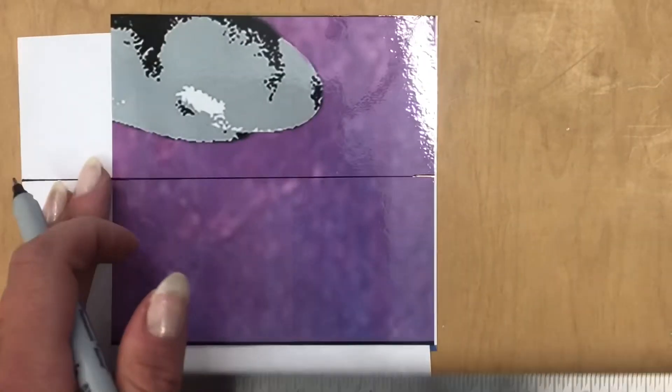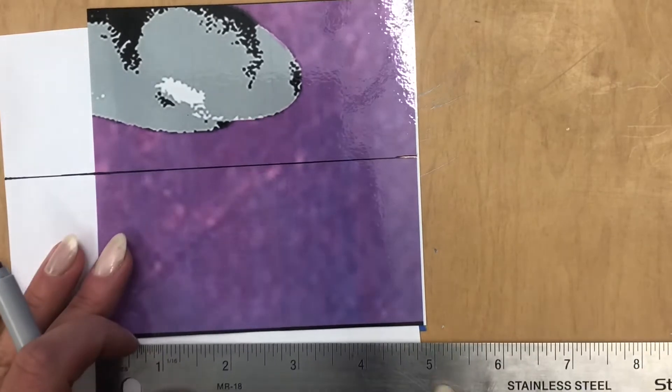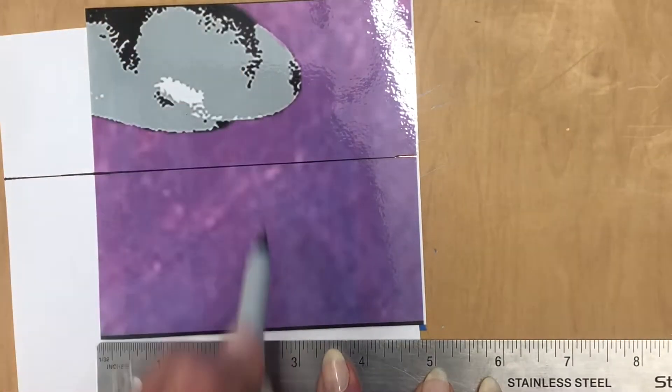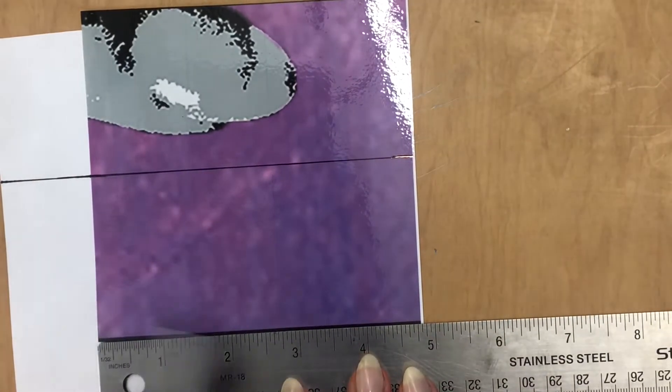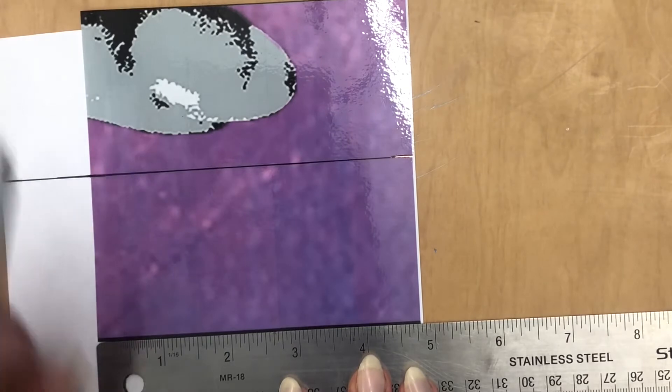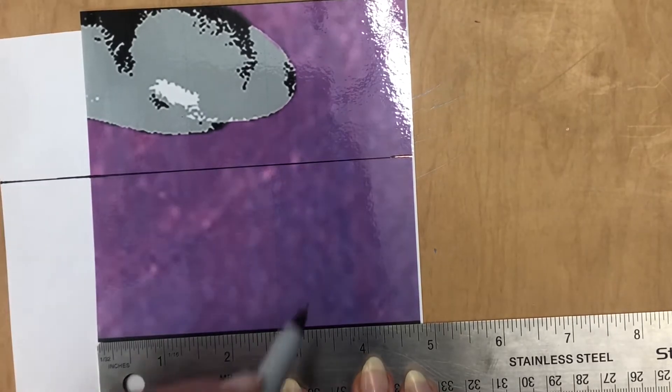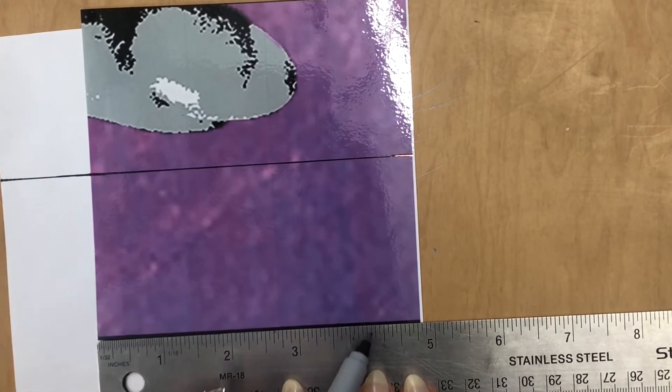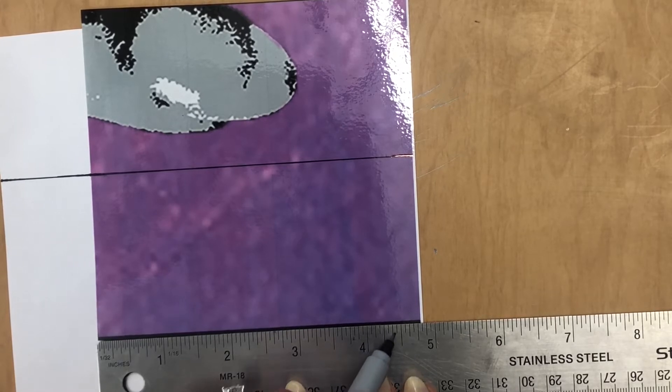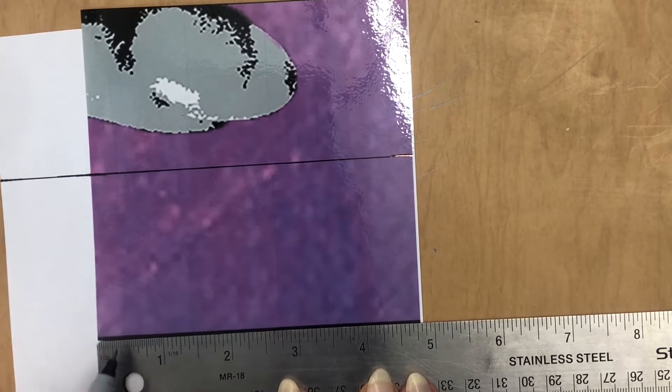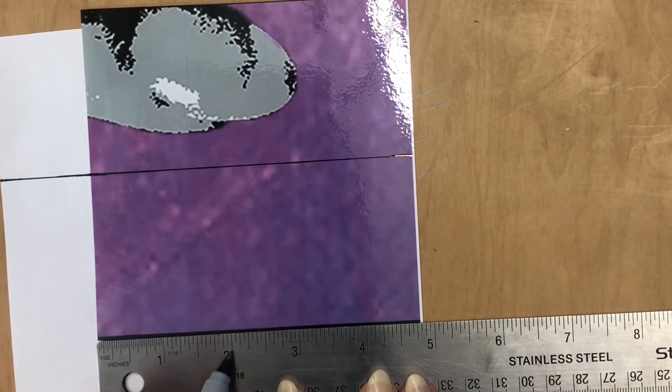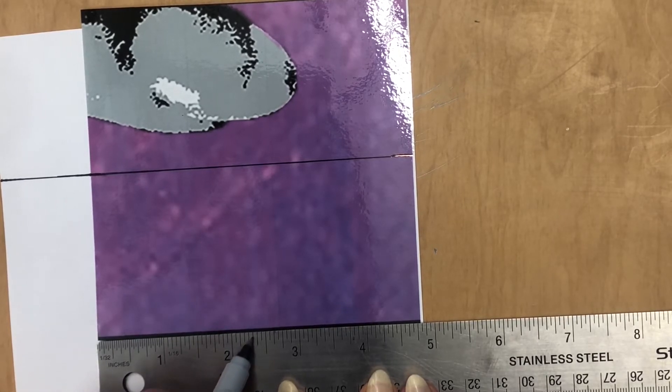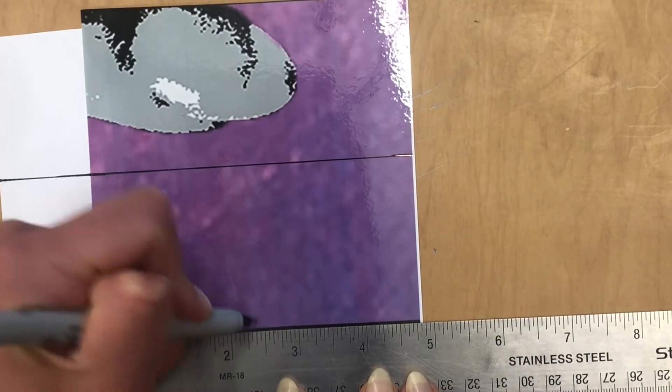Okay. Now I have to measure this side so I can draw a line across. You're going to measure against your block. You're not going to measure on the white paper. So my block is four inches, one, two, three, four, five, six, seven, eight, nine, 10, 11, 12 millimeters again. So I'm going to measure two inches and six millimeters, two inches, one, two, three, four, five, six.